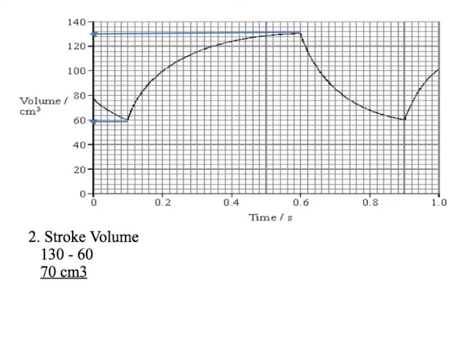So we've got the heart rate, now we need to work out the stroke volume — we can find this from the graph. The stroke volume is the volume of blood pumped out per beat of the ventricle. We need the difference between the least amount of blood in the ventricle and the maximum amount. So we've got 130 and 60 read off the graph, so the difference is 70 centimetres cubed.